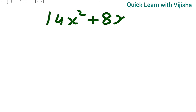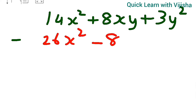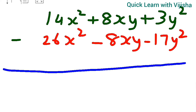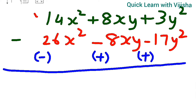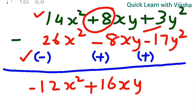Vertical method for the third question: write 14x² plus 8xy plus 3y², subtract 26x² minus 8xy minus 17y². Change signs: 26x² becomes minus 26, minus 8 becomes plus 8, minus 17 becomes plus 17. So 14 minus 26 gives minus 12x², plus 8 plus 8 gives plus 16xy, plus 3 plus 17 gives plus 20y² — same answers.